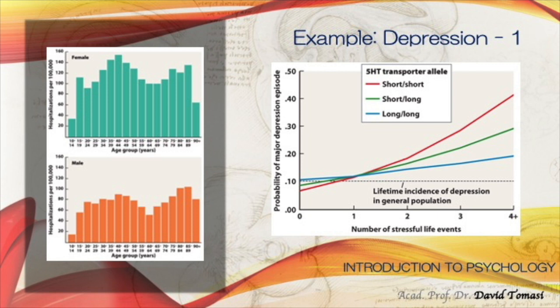On the right side, we're talking about the genetic makeup and the 5-HTT transport allele — in red short/short, in green short/long, and in blue long/long — and this relates to the probability of a major depressive episode and number of stressful events. The lifetime incidence point shows 10% of depression in the general population, meaning the probability is connected with genetic makeup, experiences, and events.